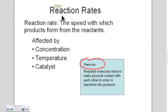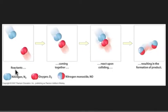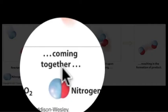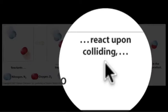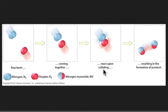Reaction rates, how fast reactions happen, can be affected by three things: concentration, temperature, and a catalyst. The main idea here is that reactive molecules must make physical contact with each other in order to transform into products. It's all about making physical contact to get a reaction.